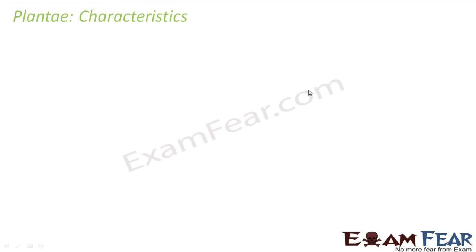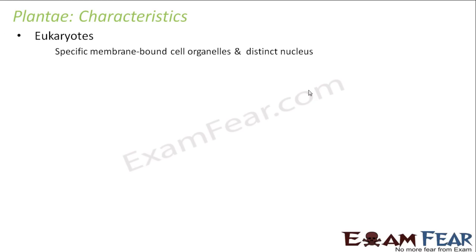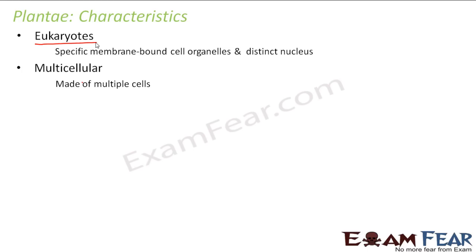Let us now look at the characteristics of this kingdom Plantae. As we rise up each kingdom we see more advanced features — from monera with unicellular prokaryotes, to protista with unicellular eukaryotes, to fungi which were multicellular eukaryotes. Similarly, plants are eukaryotes with membrane-bound cell organelles and a distinct nucleus. They are also multicellular. They are autotrophic — they can prepare their own food because all green plants generally have the green pigment chlorophyll, with the help of which they prepare food in the presence of sunlight.